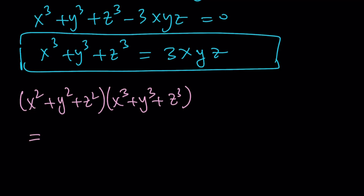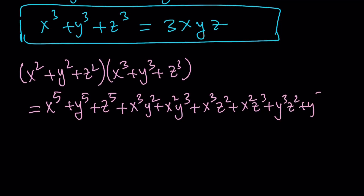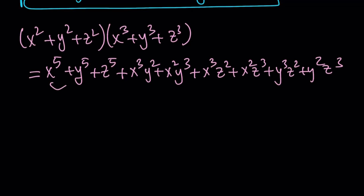If you distribute completely, you get x to the fifth plus y to the fifth plus z to the fifth, and then terms with combinations of two variables in second and third powers: x cubed y squared plus x squared y cubed, x cubed z squared plus x squared z cubed, and y cubed z squared plus y squared z cubed. That's nine terms total.